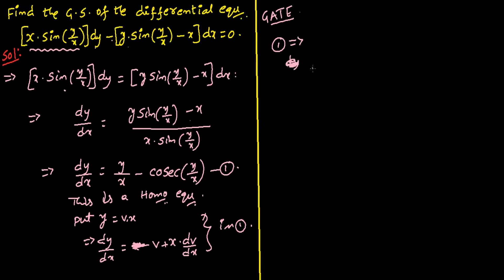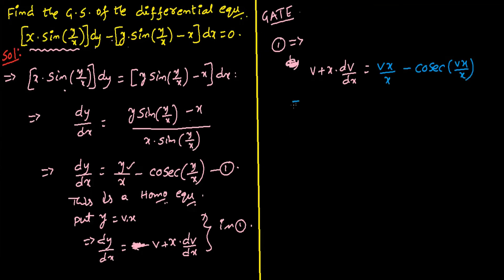So equation (1) becomes: v plus x times dv/dx equals — replacing y by vx — vx/x minus cosec(vx/x). The x terms cancel, giving v plus x times dv/dx equals v minus cosec(v).